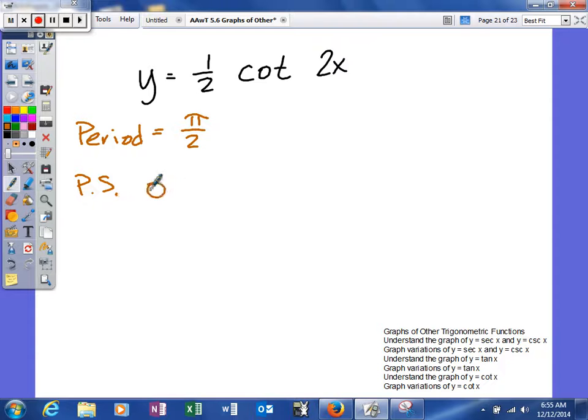Our phase shift is going to be 0 is less than, in this case, 2x, which is less than π. So to solve this, we're going to divide this by 2, and this by 2, and this by 2. When you do that, you'll get 0 is less than x, which is less than π halves.